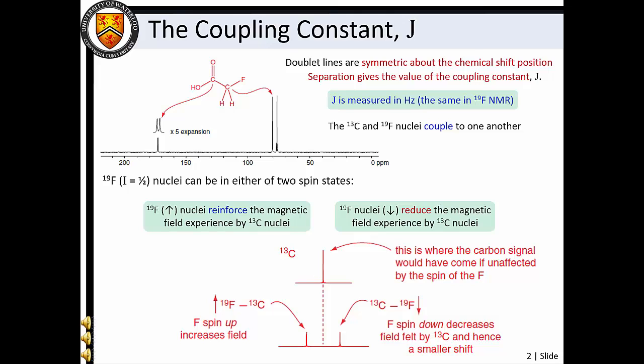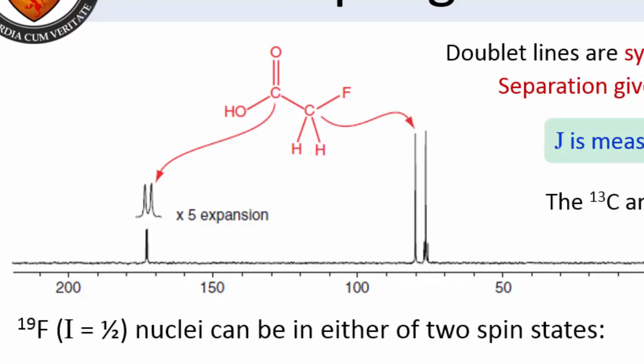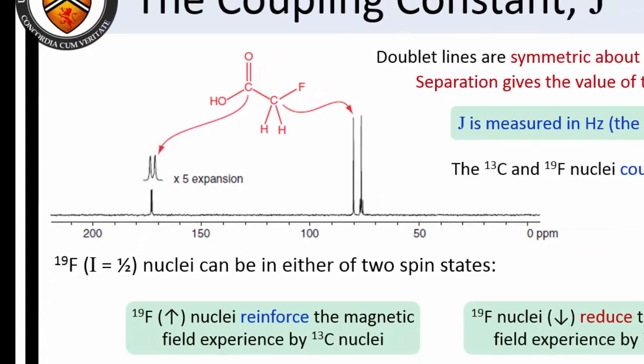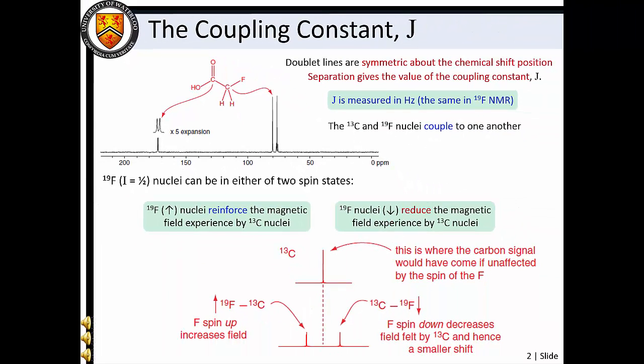Carbon atoms in molecules with a spin-down fluorine, on the other hand, experience a decreased effective magnetic field, resulting in a slight decrease in their transition frequencies. As a consequence of nuclear spin coupling between the fluorine and carbon atoms, the carbon NMR signals have been split into two lines. This splitting pattern is known as a doublet. The doublet lines are symmetric about the original chemical shift position, and the separation between lines gives the value of the NMR coupling constant J.